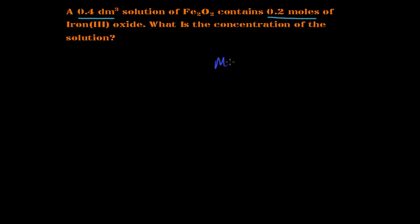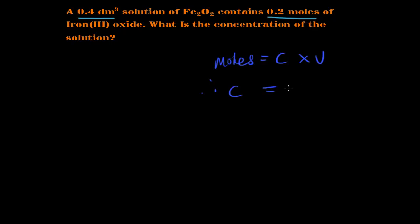This is a straightforward calculation. We take the formula moles equals concentration multiplied by volume, and rearrange it. We're trying to find concentration, so we divide both sides by the volume. Therefore, concentration equals moles divided by volume. So I'm going to divide 0.2 by the volume, which is 0.4.